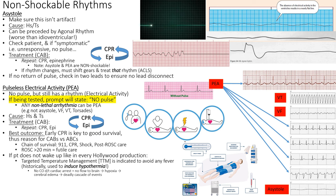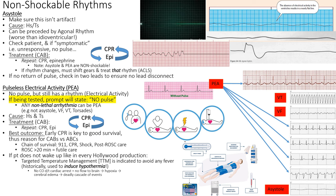PEA — pulseless electrical activity — means there's something on the EKG but no pulse. It can be almost any rhythm except the other lethal rhythms. If they have VFib or VT on the monitor with no pulse, that's something you can act on differently. Otherwise, if there's electrical activity but no pulse and it's not another identifiable lethal rhythm, it's called PEA.